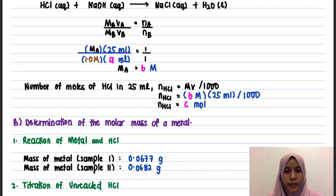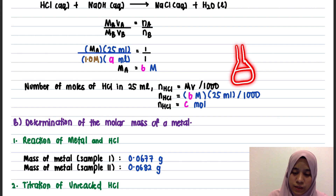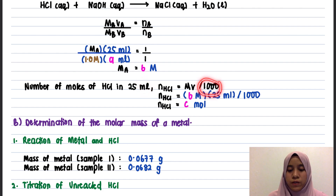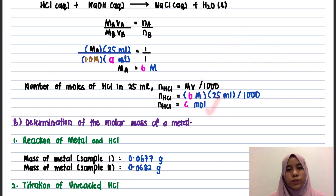Next, we find the number of moles of HCl when there is 25 ml of HCl in the conical flask. The number of moles equals M × V / 1000, because the volume is in ml. If you use N = MV, make sure the volume is in liters. This gives the total number of moles of HCl in the conical flask before starting Part B of the experiment.